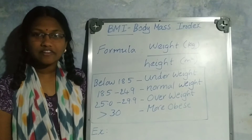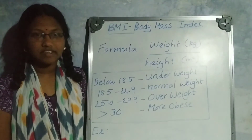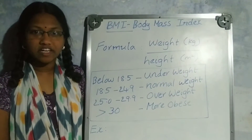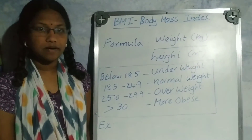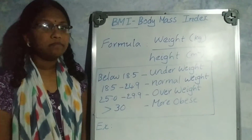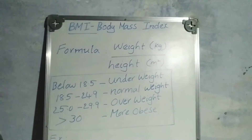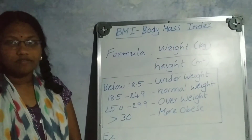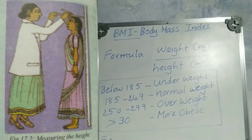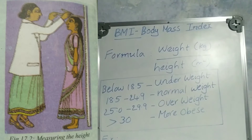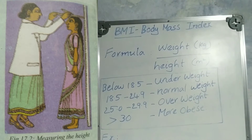Hi friends, welcome back to my channel. In this video, I am going to explain how to calculate BMI. BMI means body mass index. BMI is used to calculate whether adults are undernourished or overweight. It is called BMI.